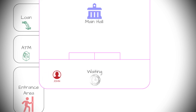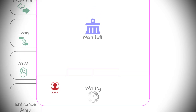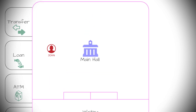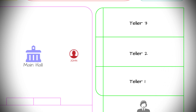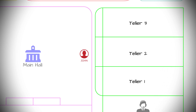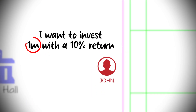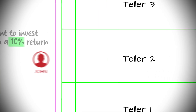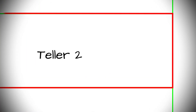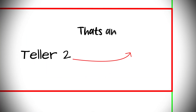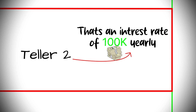A man walks into a bank, right? Who in this case we'll name John. John proceeds up to the counter and tells the bank teller — teller number two — I want to invest one million dollars at a 10% return.